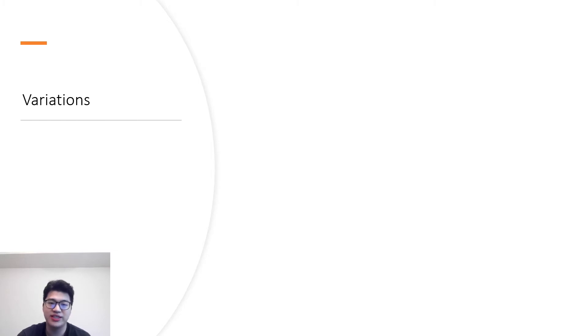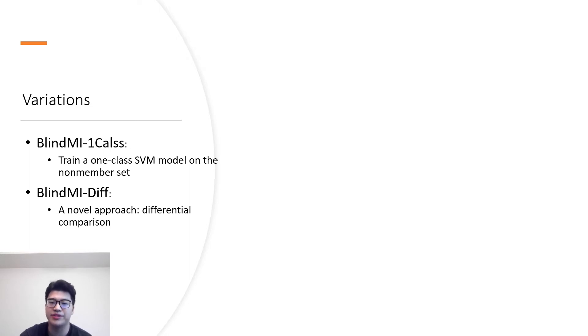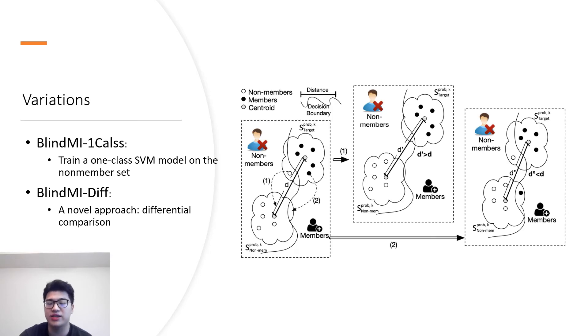To compute the similarity, we have two variants. BlindMI-1Class trains a one-class model from the selected output probabilities of the non-member data set and classifies samples in the targeted set using the trained model. BlindMI-Diff adopts differential comparison to classify members and non-members in the targeted set. The high-level idea of the key step in differential comparison is to measure the distance between targeted set and non-member data set. And then we recalculate the distance after moving one sample from targeted set to non-member data set. If the distance enlarges, we will consider the moved sample as a non-member. Otherwise, we will consider it as a member. This is an iterative process until convergence.